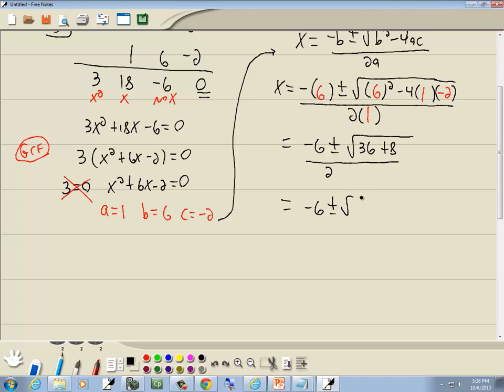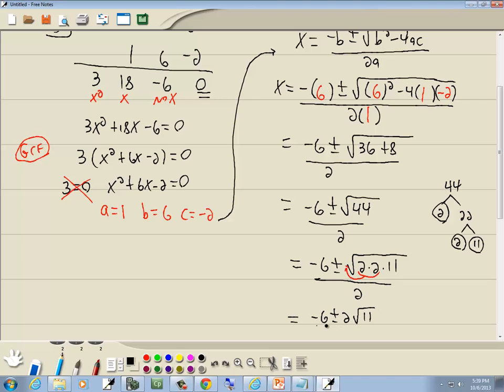So we've got negative 6 plus or minus 36 plus 8 is 44 over 2. Now let me show the prime factorization of that using a tree. So 44, I start with my first prime which is 2, 2 times 22. 2 is prime so I stop on it. The 22 is also divisible by 2, 2 times 11. Both 2 and 11 are prime. So 44 is 2 times 2 times 11 all over 2. Now with the square root we're looking for a pair of somethings. Here's a pair of 2's, they're going to come out in front as a single 2. So we're going to have negative 6 plus or minus 2 square root of 11 over 2.